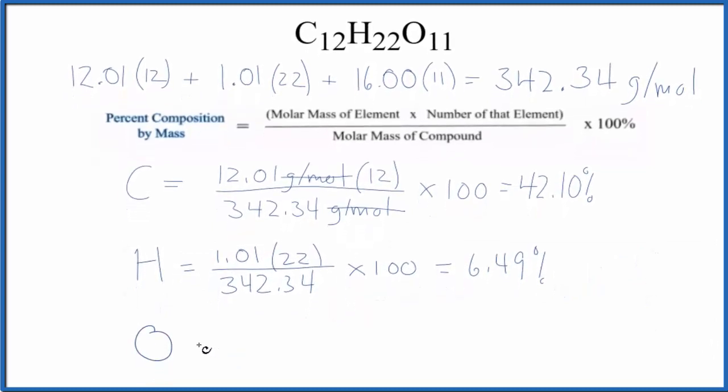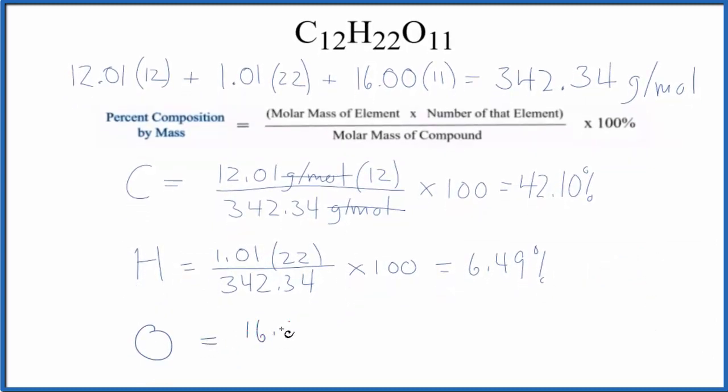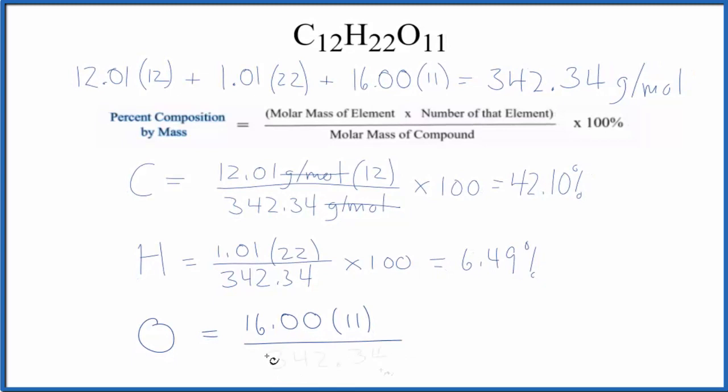For the oxygen, oxygen on the periodic table, 16.00 grams per mole. The number of the element, 11 oxygen atoms. And we divide by the molar mass of the whole compound. Multiply by 100. We get 51.41%. And these numbers should add up to close to 100.